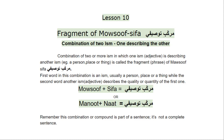So one is the describer and the other one is the ism that is described. Definition-wise, it is a combination of two or more ism in which one ism, which is the adjective, is describing another ism — a person, place, or thing. So this is called the Fragment of Masuf Sifa.